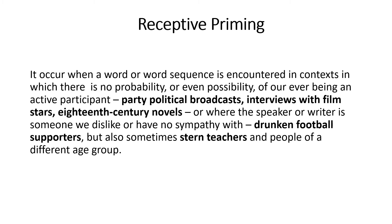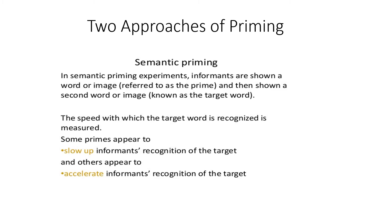Receptive priming, on the other hand, is not related to environments we enjoy. It occurs when a word or word sequence is encountered in a context where there is no possibility of our being an active participant — for example, political broadcasting, interviews with film stars, or 18th-century novels. It also applies where the speaker or writer is someone we dislike, such as a very strict teacher. We cannot participate, so it is called receptive priming.